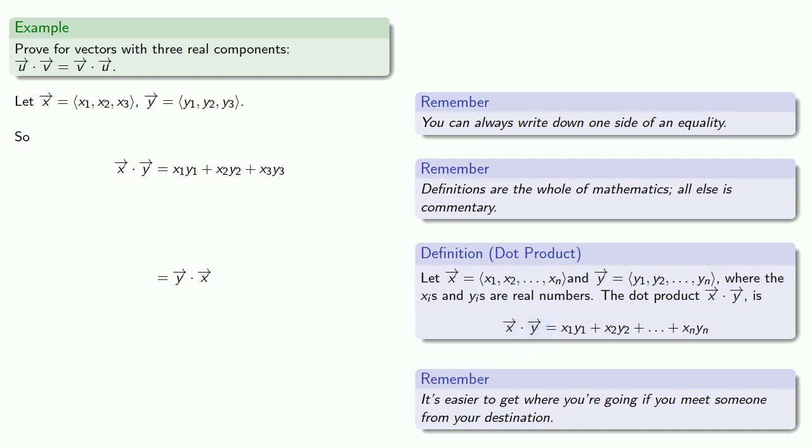And, what this means is that with definitions and nothing else, we can go backwards. So, Y·X, our definition says that that is the sum of the component-wise products, and we can go back a step.